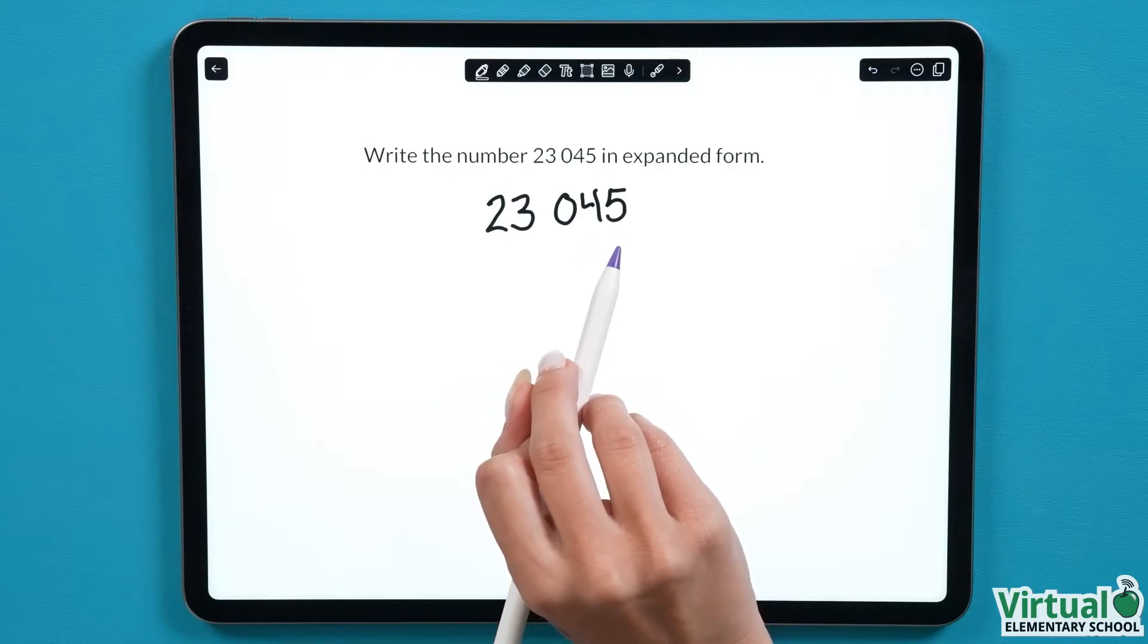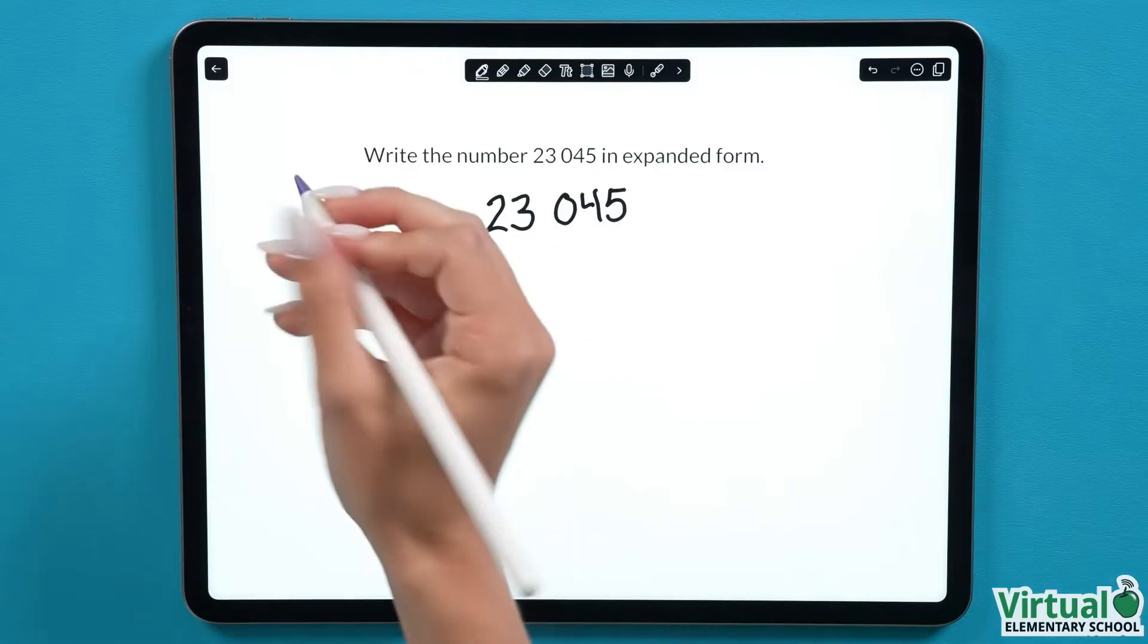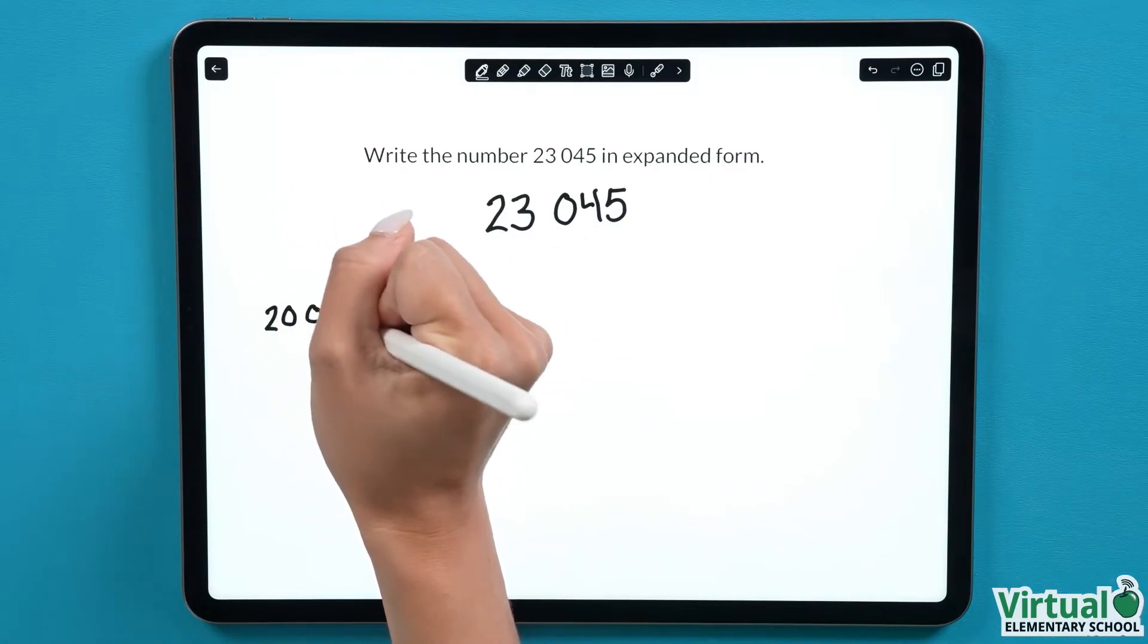The 2 has 1, 2, 3, 4 places beside it so we know it's in the 10,000s column. Since there are 2 of them, this is 20,000. We'll start by writing out 20,000. Before we can move to the next number, we need to add a plus sign.